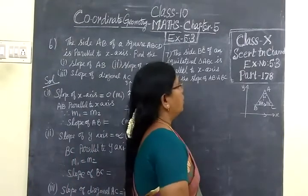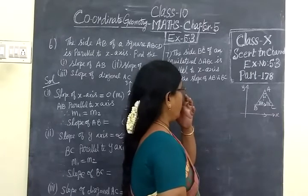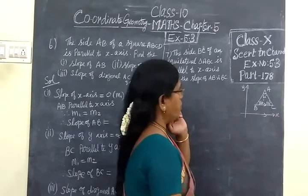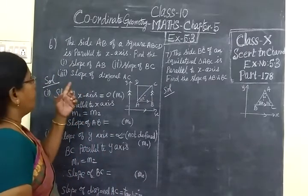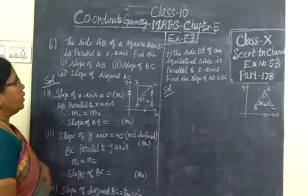Good evening students. In exercise 5.3 part 178 we have seen two sums. The side AB of a square is parallel to X axis.